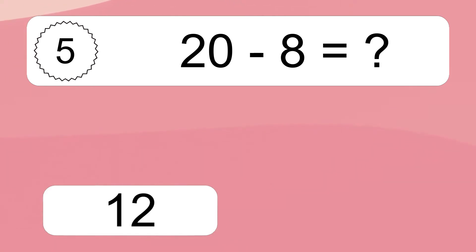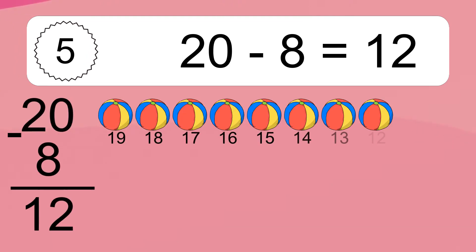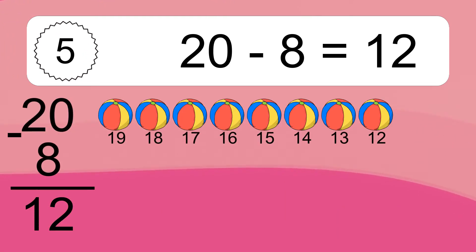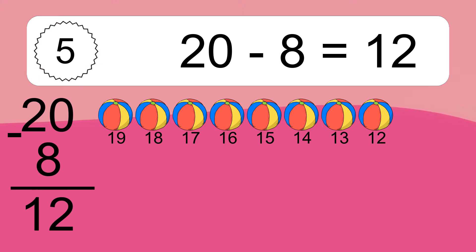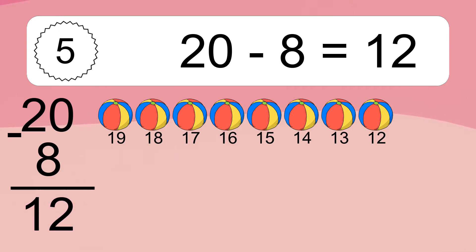20 minus 8 equals 12. Let's count it: 19, 18, 17, 16, 15, 14, 13, 12.